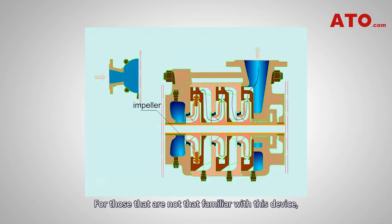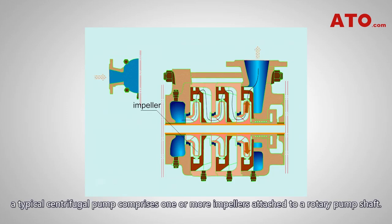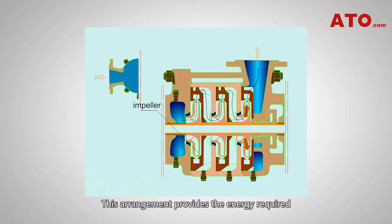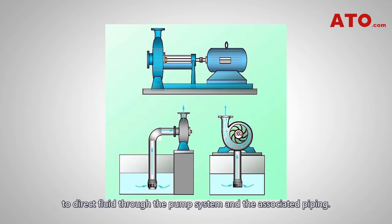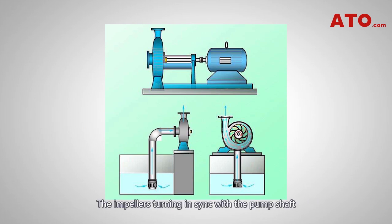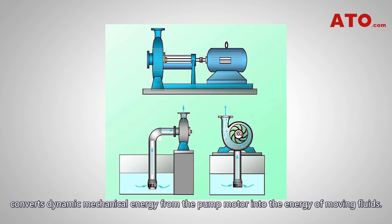A typical centrifugal pump comprises one or more impellers attached to a rotary pump shaft. This arrangement provides the energy required to direct fluid through the pump system and the associated piping. The impellers turning in sync with the pump shaft convert dynamic mechanical energy from the pump motor into the energy of moving fluids.